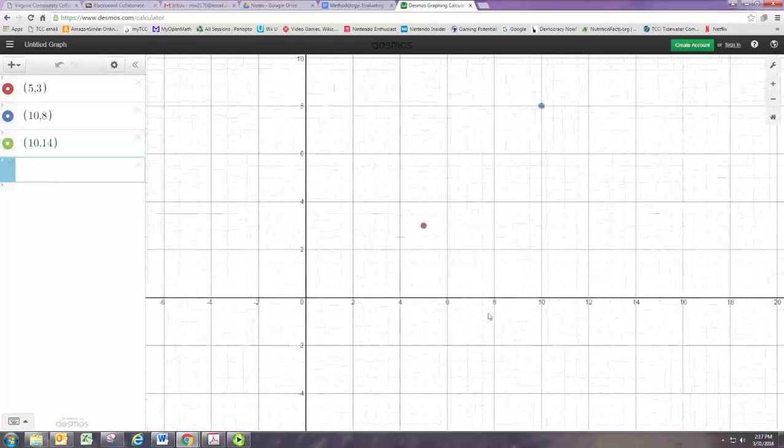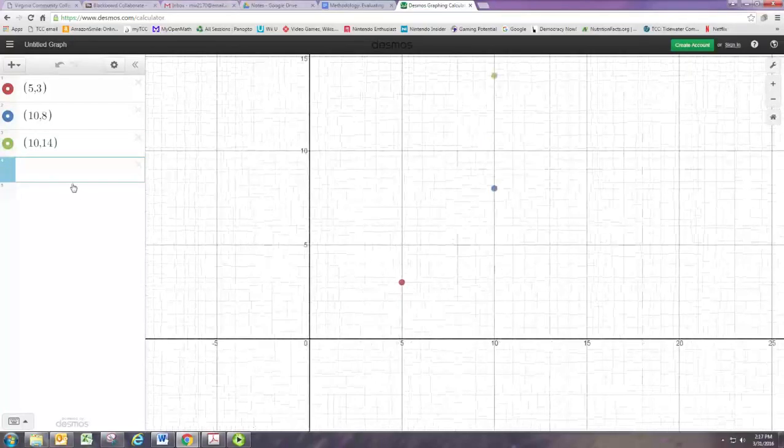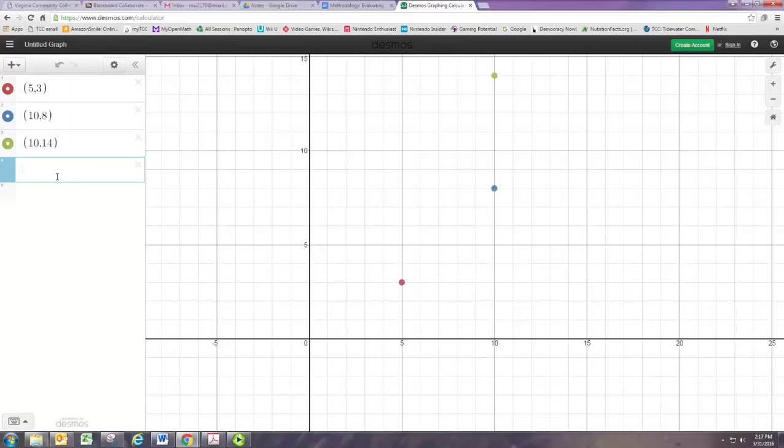If you look at the graph here, you can see that it does fail the vertical line test. If I were to put a vertical line at 10, it would actually hit both of those points. A vertical line cannot intersect the graph at more than one point. So you see that happening there.